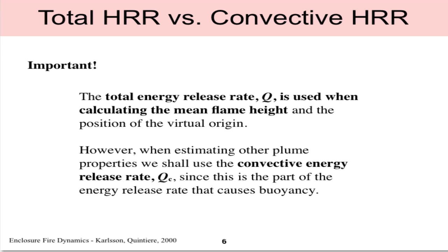Before we do that, I'd like to make the distinction that the total energy release rate Q should be used when calculating the mean flame height and the position of the virtual origin. Otherwise, when we estimate other plume properties, we'll use QC, which is the convective heat release rate. Typically, for most fires and for this course, we will assume that the convective energy release rate is 70% of the total heat release rate. This is true for liquid pool fires and most cases.